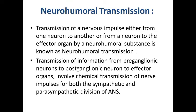Neurohumoral Transmission. Transmission of a nervous impulse either from one neuron to another or from a neuron to the effector organ by a neurohumoral substance is known as neurohumoral transmission. It involves transmission of information from pre-ganglionic neurons to post-ganglionic neurons to effector organs, involving chemical transmission of nerve impulse for both the sympathetic and parasympathetic division of the ANS.